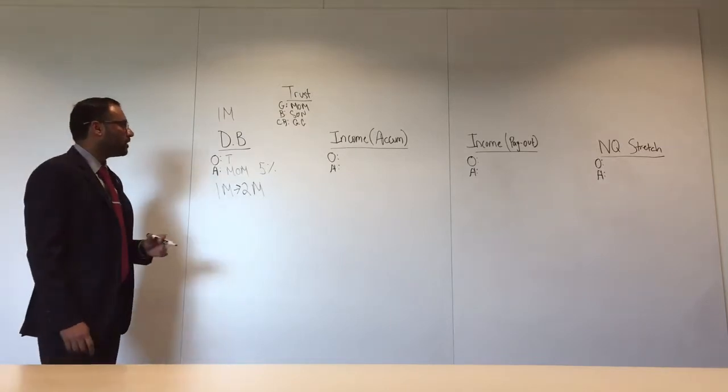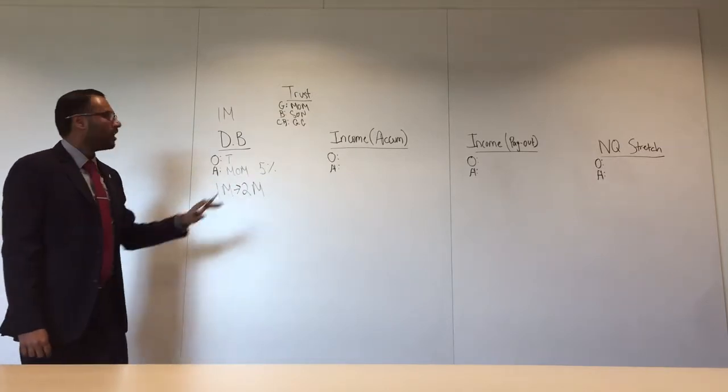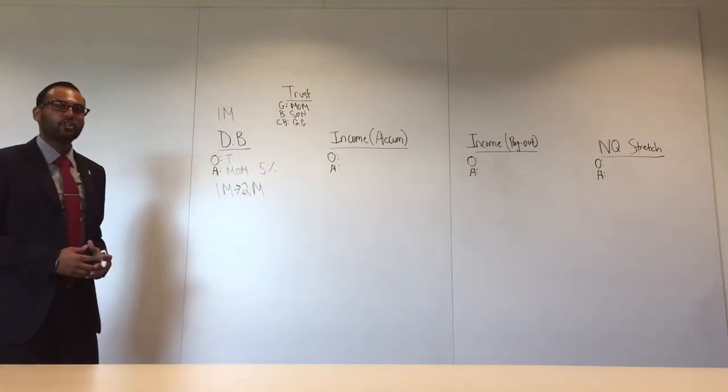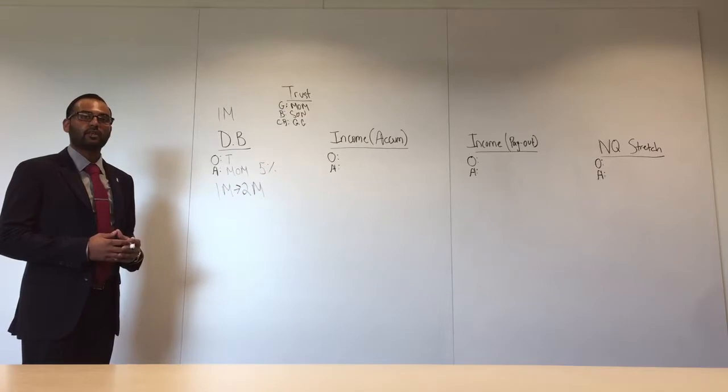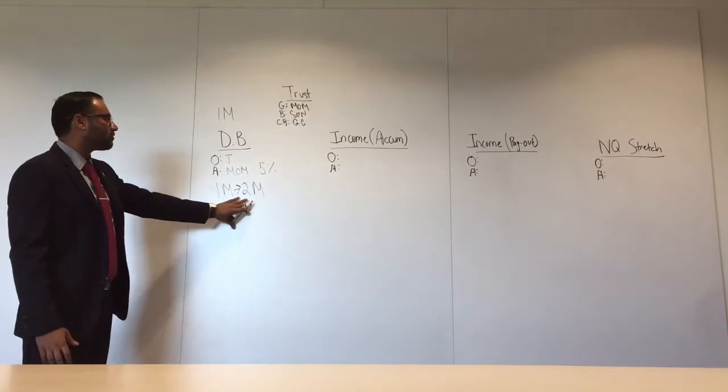Now what you're able to do is you're able to invest these assets on the risk tolerance of the beneficiary. Because the beneficiary is younger and has a longer time horizon, you'll be able to get aggressive with your investments and try to beat this 5% guarantee.